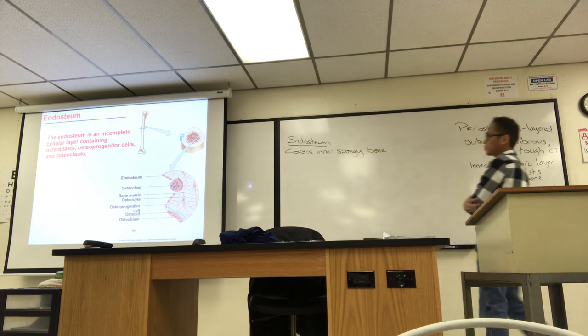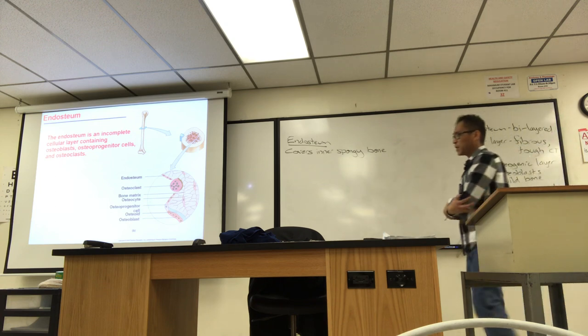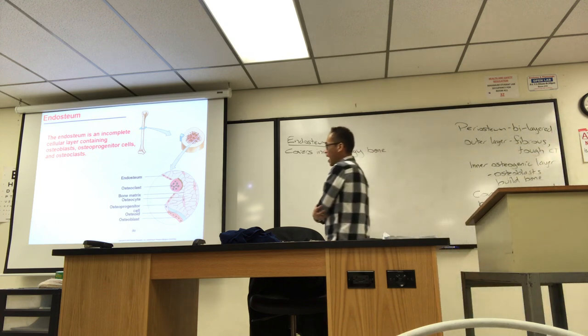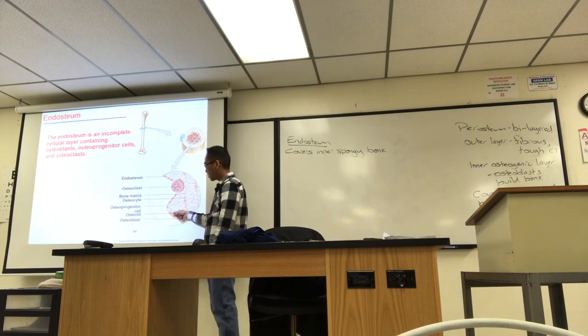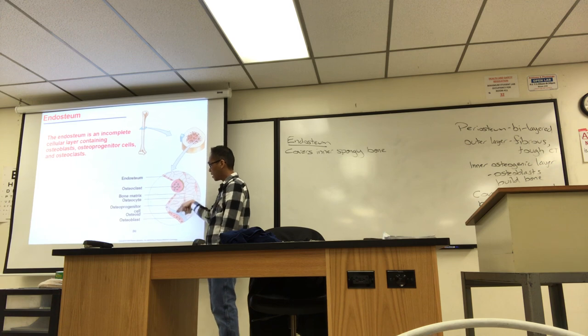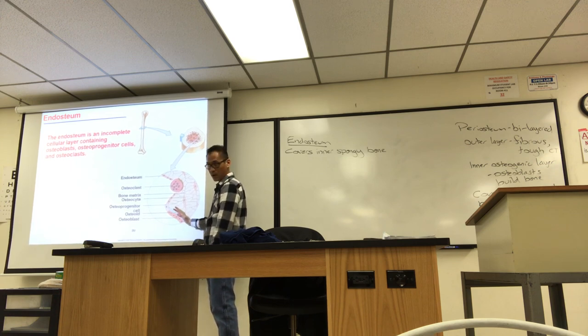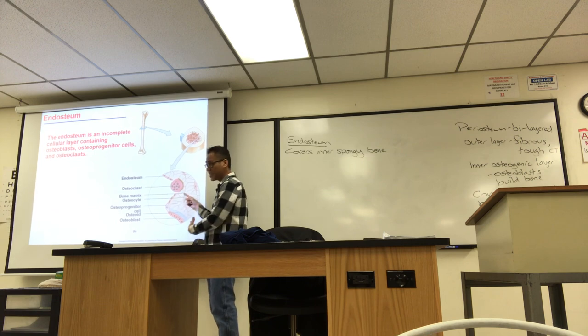It covers outer compact bone. It helps where the muscles insert. It helps form the joint capsules. The endosteum covers the inner spongy bone. Now the inner spongy bone, this endosteum, it's an incomplete layer. They have some osteoblasts, maybe an osteoprogenitor cell, osteoclasts. So basically it's osteoblasts, osteoclasts. So you're either building bone or breaking it down from the inside.